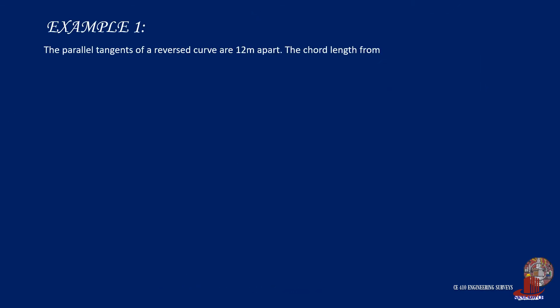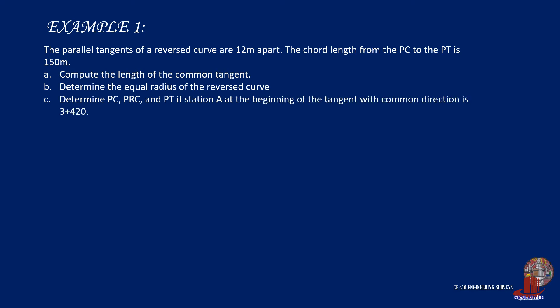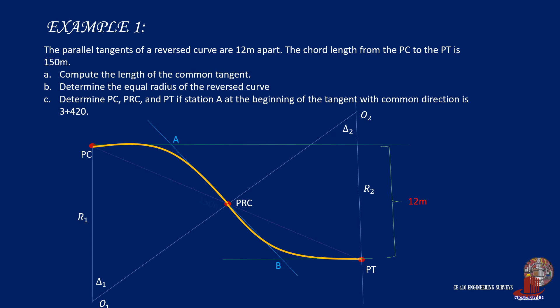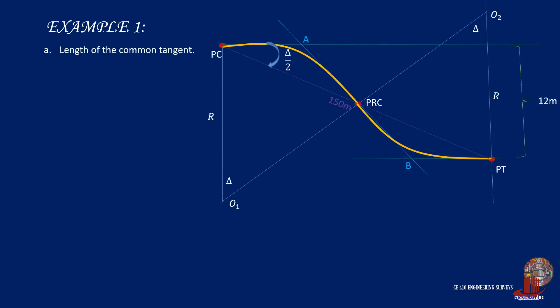Example 1. The parallel tangents of a reverse curve are 12 meters apart. The chord length from the PC to the PT is 150 meters. A, compute the length of the common tangent. B, determine the equal radius of the reverse curve. And C, determine PC, PRC, and PT if station A at the beginning of the tangent with common direction is 3 plus 420. The stated problem can be clearly understood with the proper illustration. An equal radar reverse curve will be dealt with parallel tangents. So the parallel tangents from the PC to PT will be 12 meters apart. The chord form has the length of 150 meters. Another given is the station of point A. From description, point A is the vertex of the first curve and it is stationed at 3 plus 420. The first requirement is the common tangent which is designated as AB. With the limited given, figure out triangles to solve for the other elements.